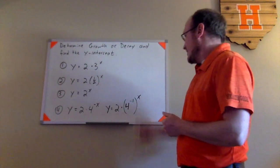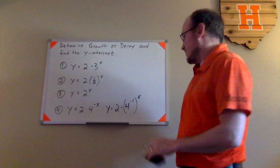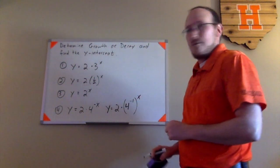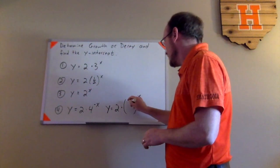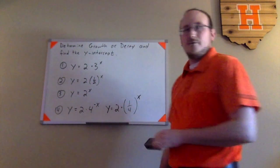4 to the negative first power is actually 1 over 4 to the first, or 1 fourth. So by rewriting that like this, I think it becomes a little bit more obvious that 1 fourth is something between 0 and 1.